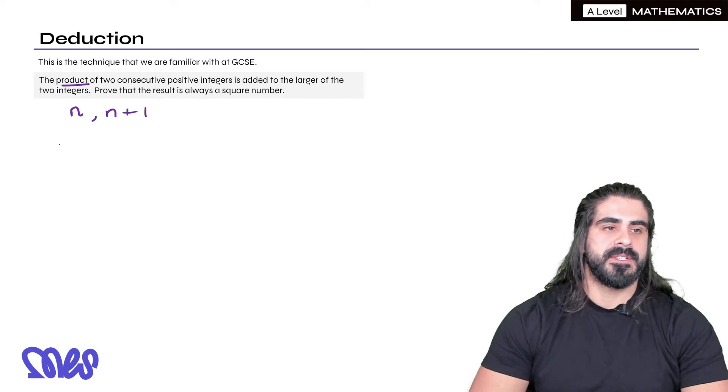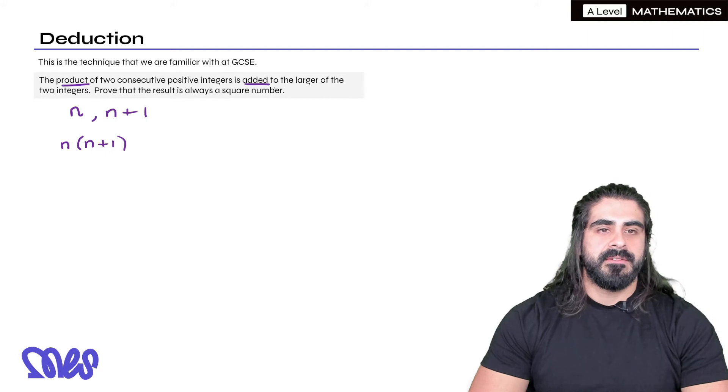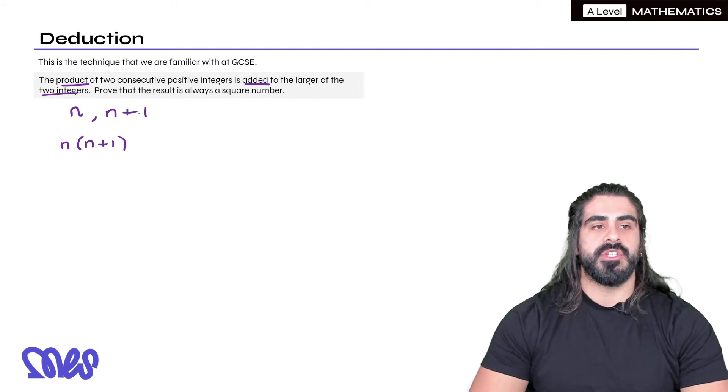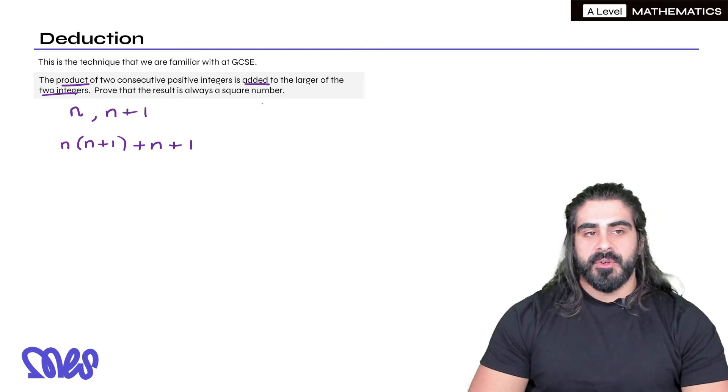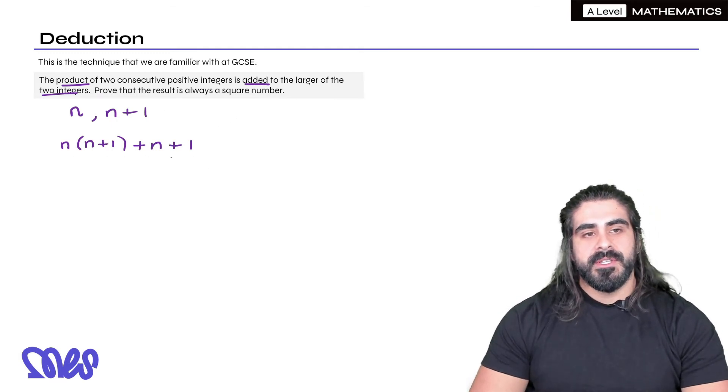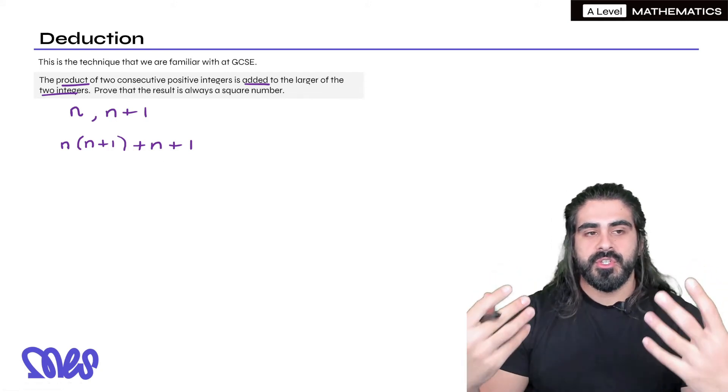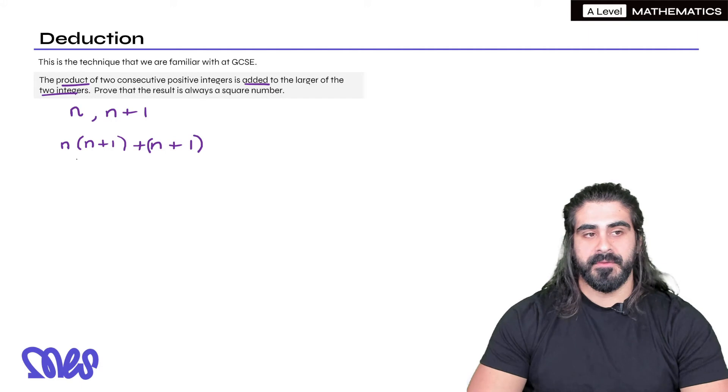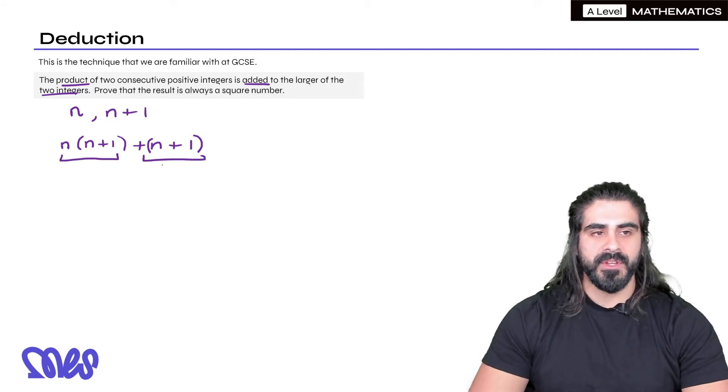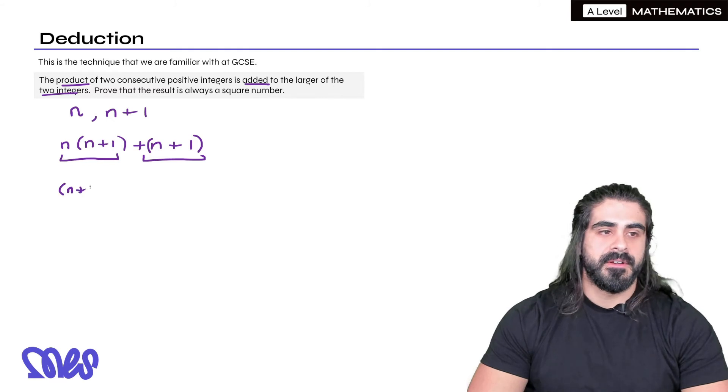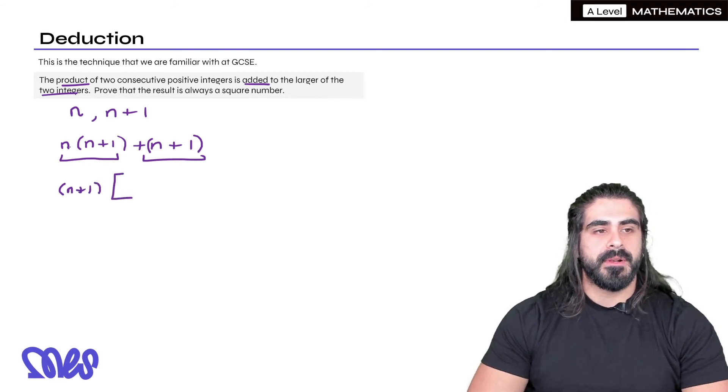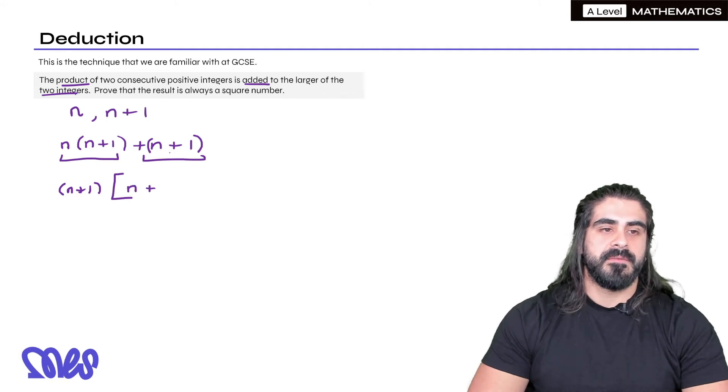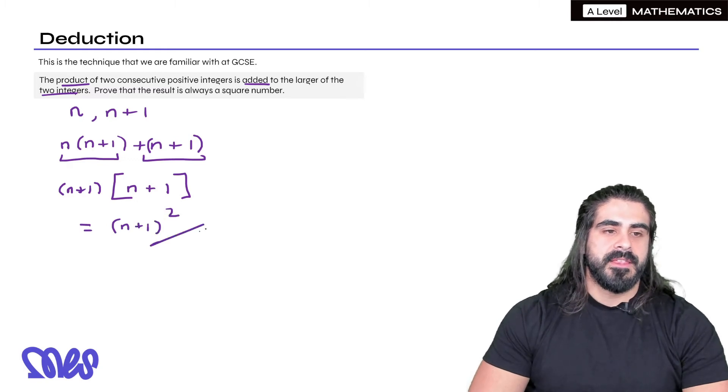So we have consecutive integers. So we can have n and n plus 1. The product. So if we multiply them together and then add the number to the larger of the two, which is n plus 1, the result is always a square number. So we need to prove that this is always a square number. Now there's different ways you can do this, guys. You can expand it all, solve the quadratic, well not solve the quadratic, but factorize the quadratic. I'm going to do something else. I noticed that there's n plus 1 in both terms, here and here. So I'm going to factorize out n plus 1. What would be left? Well in the first term, if I take out an n plus 1, I'd be left with n, plus if I factorize out n plus 1 from n plus 1, I'm left with 1. So we have n plus 1 times n plus 1, which is n plus 1 squared. And then that is then proved.